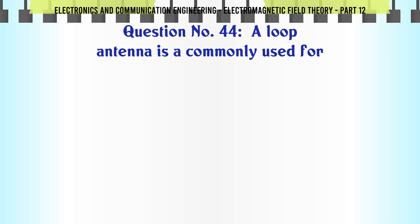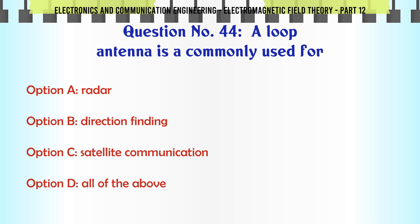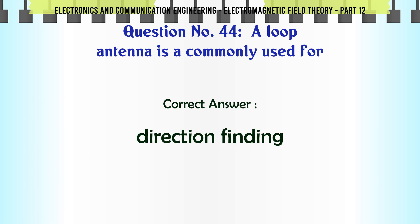A loop antenna is commonly used for: A. Radar, B. Direction finding, C. Satellite communication, D. All of the above. The correct answer is Direction finding.